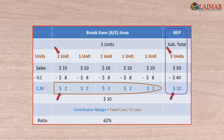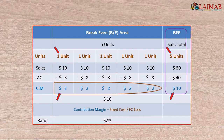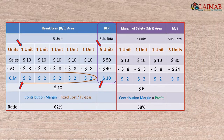We understand that at the breakeven point area, contribution margin recovers total fixed cost, so total contribution margin equals total fixed cost. Thereafter, if sales increase by another one unit, it creates another $2 contribution margin. Now it's not required to recover fixed cost because that has already been done, so it creates a profit for the company.